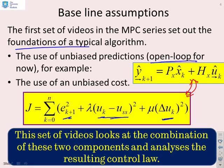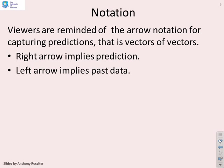Notation then. Viewers are reminded of the arrow notation that was given in the early videos, chapter one, and the arrow notation basically gives vectors of vectors where a right arrow tells you looking forward in time, so it's prediction, and a left arrow tells you looking backwards in time, so it's past data.